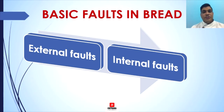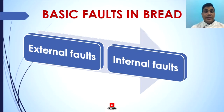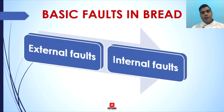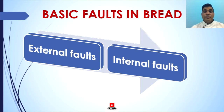Incorrect time and temperature for fermentation and proving conditions, incorrect method of knockback, dividing, molding, and panning can also lead to a fault in bread. Improper baking temperature, time, and humidity is also a reason. Inadequate cooling before slicing and packaging, improper storage conditions — which can lead to mold and rope in bread — and less knowledge, skill, and experience of a baker are also contributing factors.